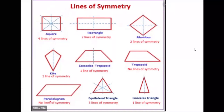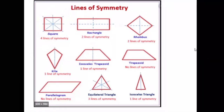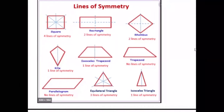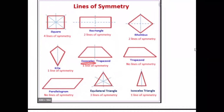A parallelogram has no lines of symmetry — no lines that cut it exactly in half. An equilateral triangle has three lines that cut it exactly in half. An isosceles triangle, which means two equal sides, has one line that cuts it exactly in half. So lines of symmetry are lines that cut a shape exactly in half.